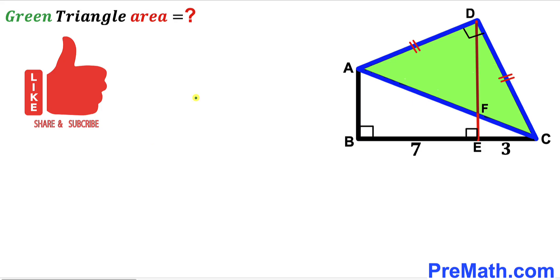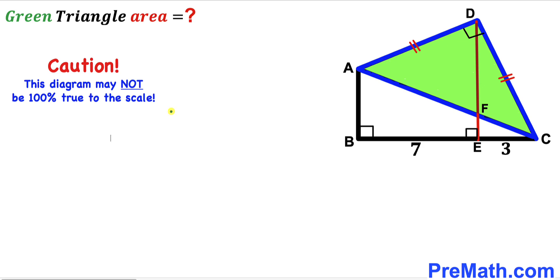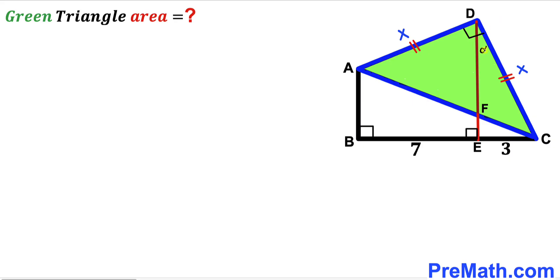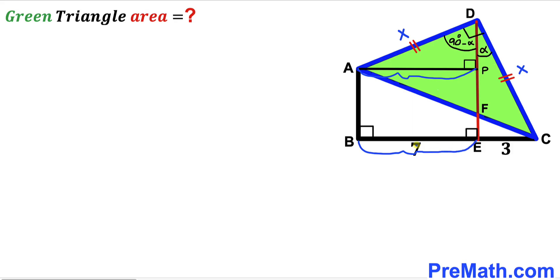Please give a thumbs up and subscribe, and keep in mind that the figure may not be 100% true to scale. Let's focus on the green shaded isosceles triangle ADC. Let's assume each equal side is X units. For the right angle ADC — 90 degrees — if this angle is alpha, the remaining angle is 90 degrees minus alpha. I've dropped perpendicular AP onto side DE, so AP equals BE, which is 7 units.